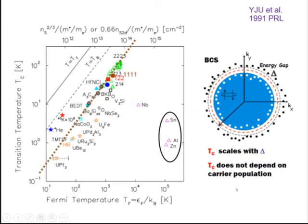In BCS superconductors, TC does not scale with the Fermi energy or superfluid density. For example, tin, aluminum, and zinc have approximately the same Fermi temperature but very different TC. In contrast, most unconventional new superconductors show TC directly related to the number of carriers — a fundamental difference from BCS condensation.